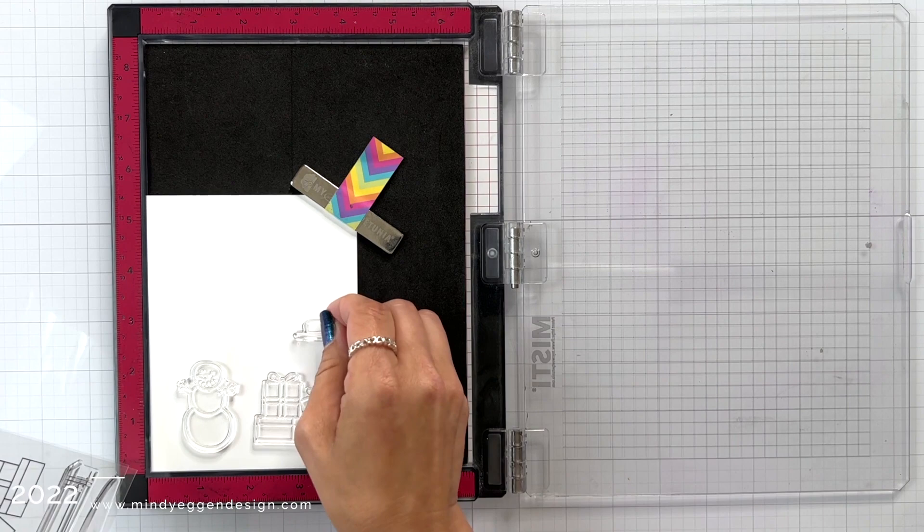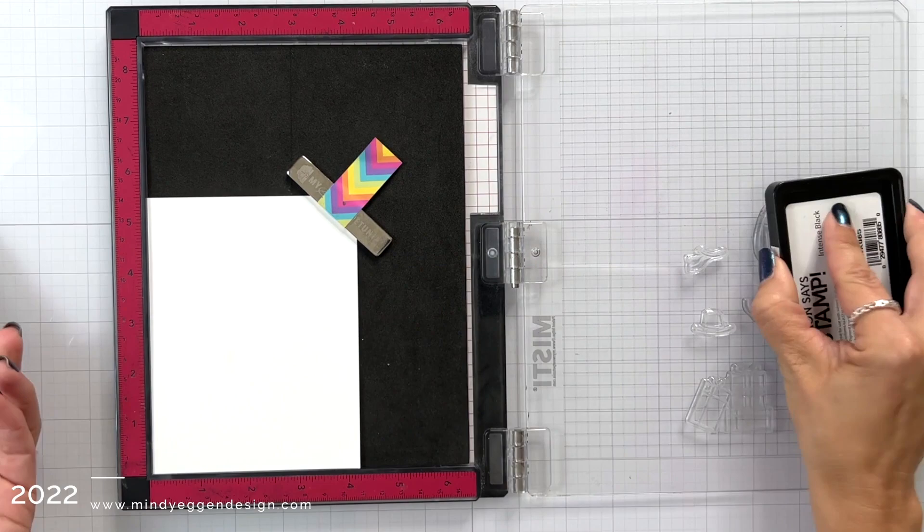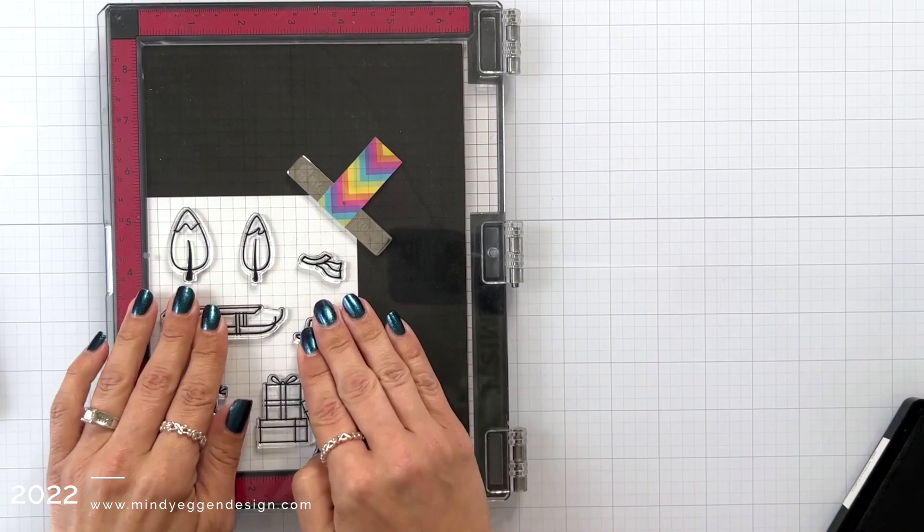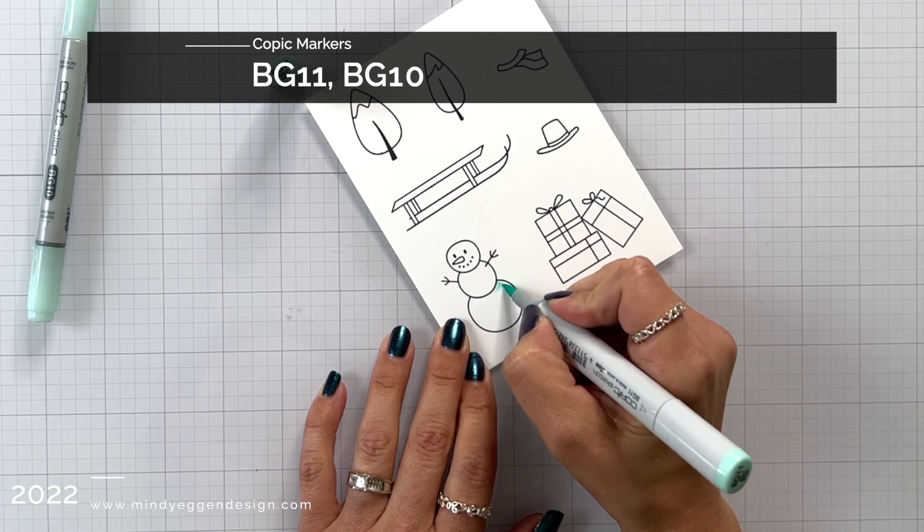I'm placing them on 80-pound white cardstock and I'm going to pick them up with the door of the MISTI and ink them up using the Simon Says Stamp Intense Black Ink. This is a Copic-friendly ink and I plan on coloring these with my Copic markers. You can purchase the stamp set individually or with the coordinating dies.